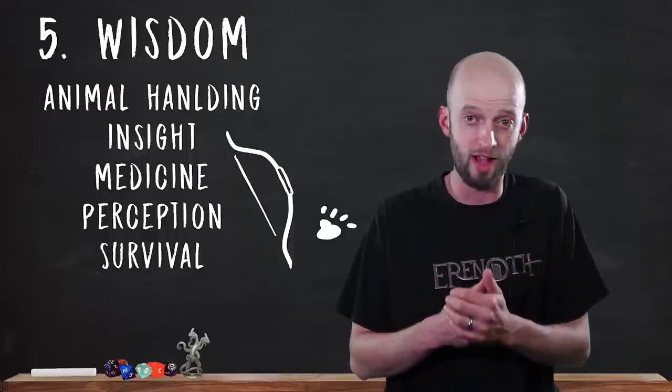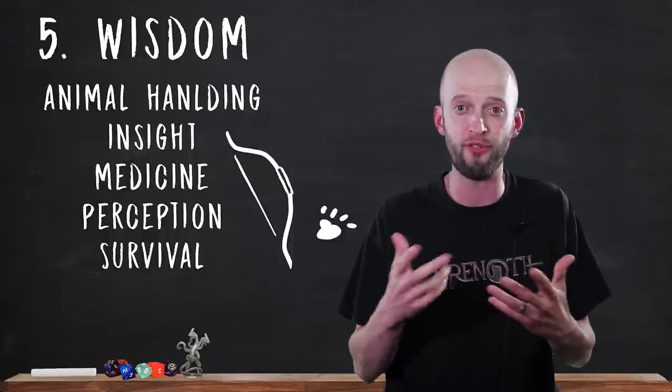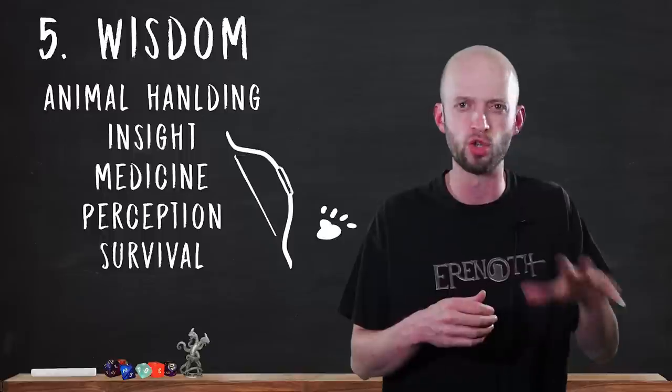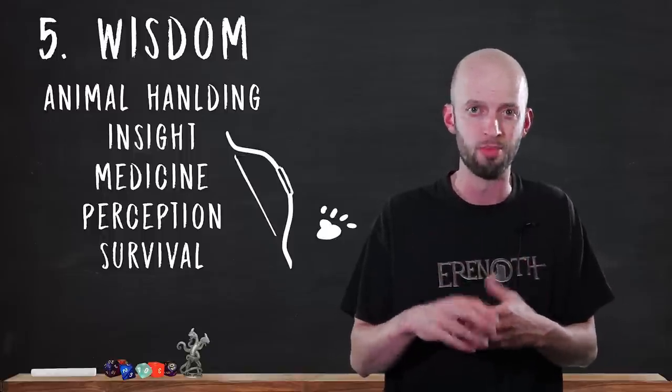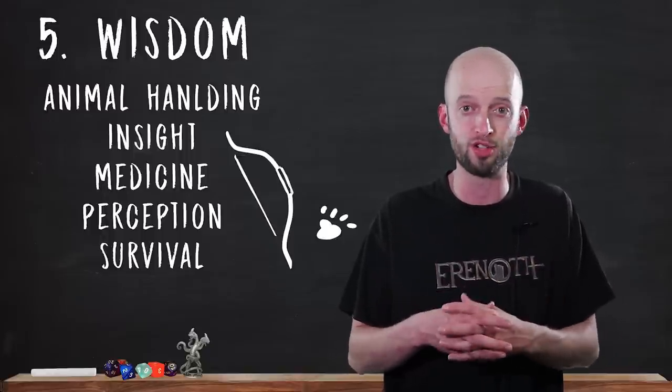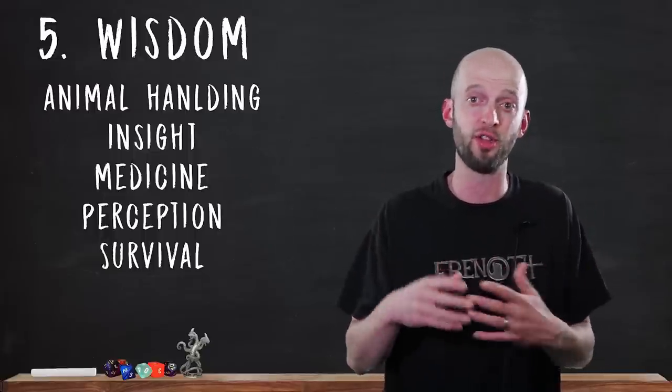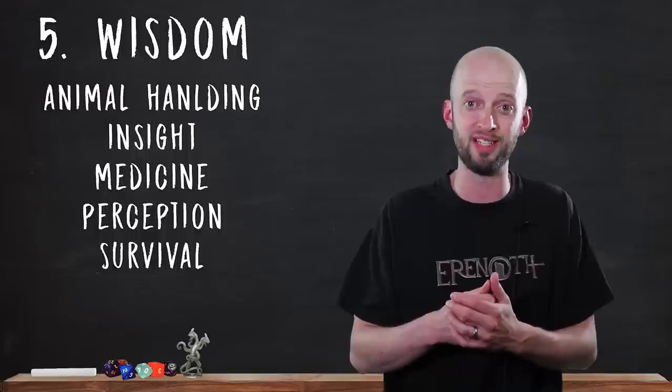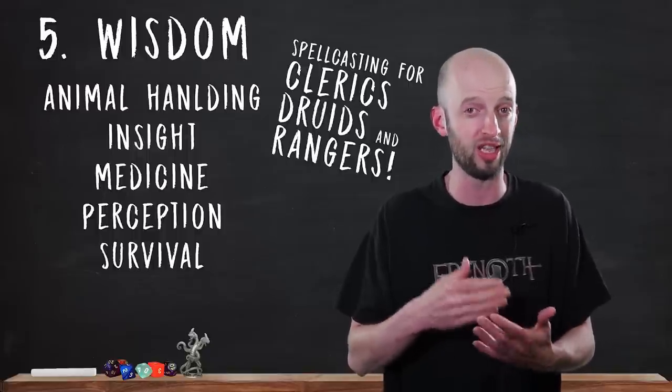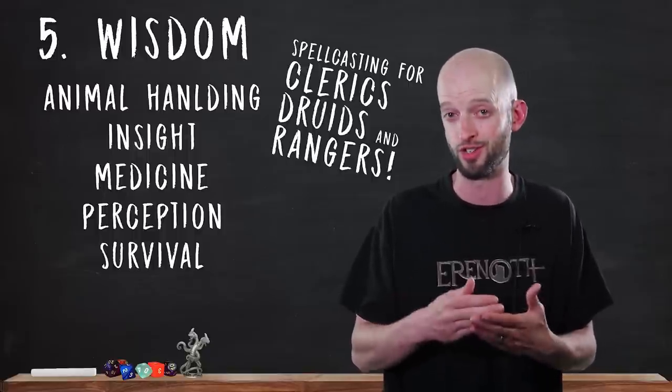Survival. Survival checks can be used when you attempt to guide your group through tough areas of the wild. Check for tracks. Hunt an animal. Predict the weather. Or avoid natural hazards. That is a lot of skills for Wisdom. In addition to all of the above, Wisdom is the spellcasting modifier for clerics, druids, and rangers.